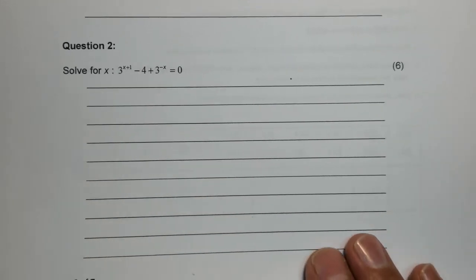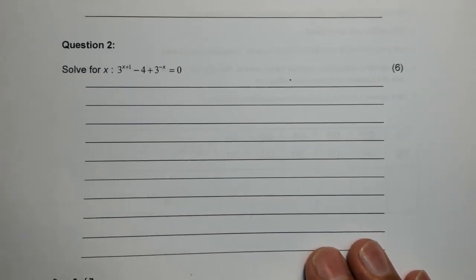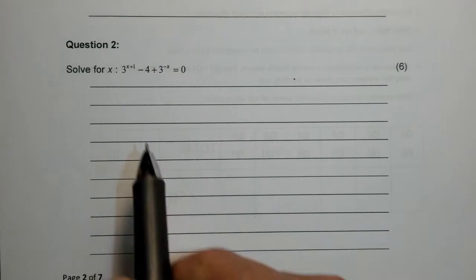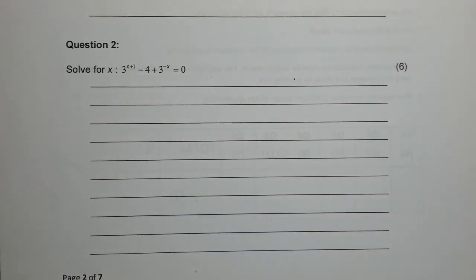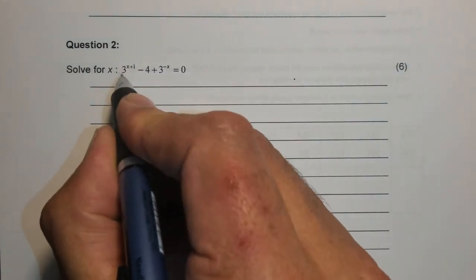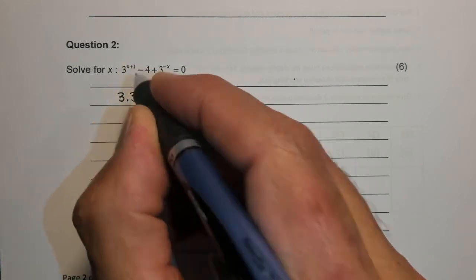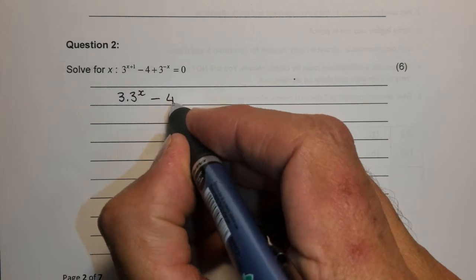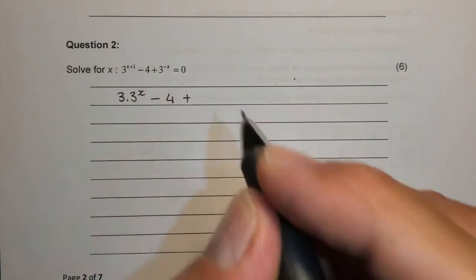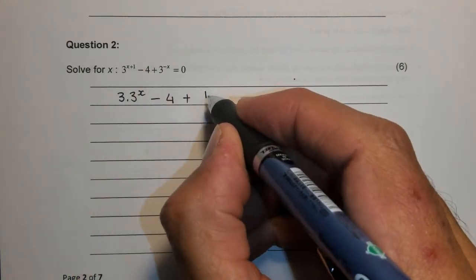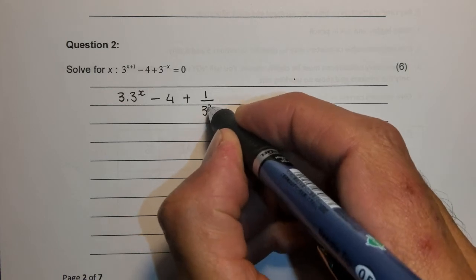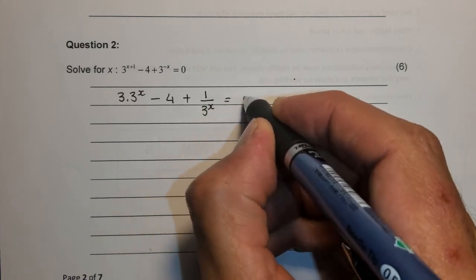Our second question was based on an exponential equation. The x's are in the power. And we are requested to solve for x. So let's have a look. This here I can break up. That becomes 3 times 3 to the x minus 4 plus 1 over 3 to the positive x is equal to 0.